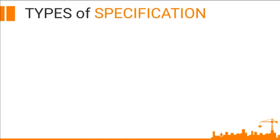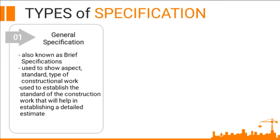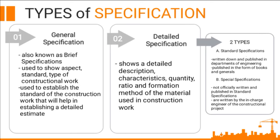Types of specification. The first type is the general specification, also known as brief specifications, used to show aspect, standard, and type of constructional work — used to establish the standard of the construction work that will help in establishing a detailed estimate. The second type is the detailed specification, which shows a detailed description, characteristics, quantity, ratio, and formation method of the material used in construction work. The detailed specification has two types: standard specifications, written down and published in departments of engineering in the form of books and journals; and special specifications, which are not officially published in standard specifications and are written by the in-charge engineer of the constructional project.